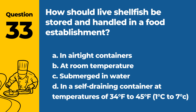Question 33. How should live shellfish be stored and handled in a food establishment? Answer: D. In a self-draining container at temperatures of 34°F to 45°F, 1°C to 7°C. Live shellfish should be stored and handled in a self-draining container at temperatures between 34°F and 45°F, 1°C to 7°C, to maintain freshness and prevent bacterial growth.